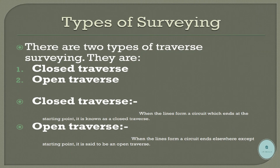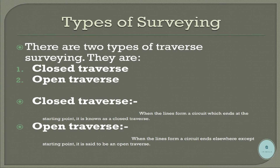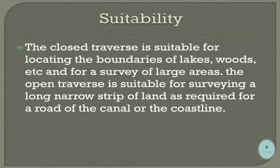Types of traverse surveying: there are two types — closed traverse and open traverse. Closed traverse: when the lines form a circuit which ends at the starting point, it is known as a closed traverse. Open traverse: when the lines form a circuit that ends elsewhere except at the starting point, it is said to be an open traverse.